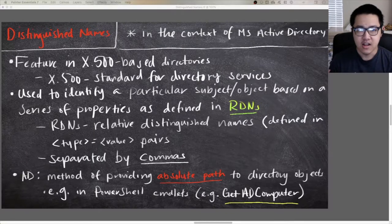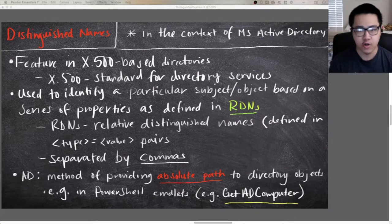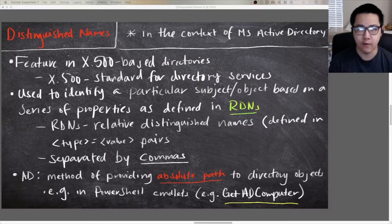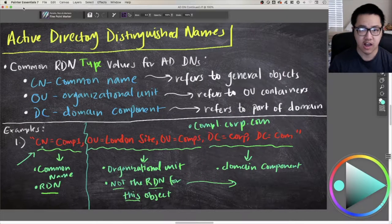In the specific context of Active Directory, it's used as a method of providing an absolute path to directory objects in AD. You can use it in PowerShell cmdlets like Get-ADComputer or New-ADComputer, where you have to provide a very specific absolute location where you're looking for a computer object or creating and pre-staging a new computer object.